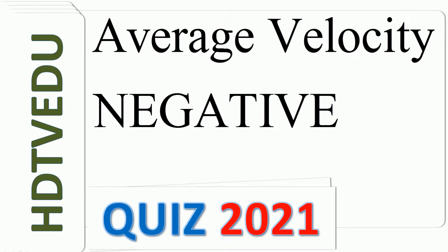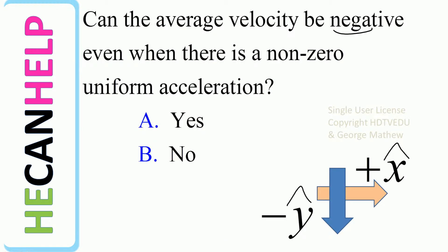Average velocity quiz 2021: Can the average velocity be negative even when there is a non-zero uniform acceleration? The answer is yes. Positive x is defined as to the right, and negative y is vertically down.